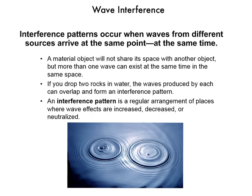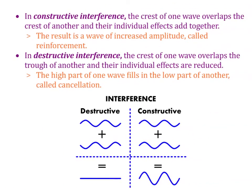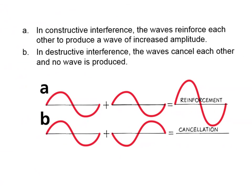When the crest of one wave overlaps the crest of another, their individual effects add together to produce a wave of increased amplitude — this is called constructive interference. Another type is destructive interference, where the crest of one wave overlaps the trough of another and their individual effects are reduced. The high part of one wave fills in the low part of the other, producing cancellation. In constructive interference, waves reinforce each other; in destructive interference, waves cancel each other and no wave is produced.